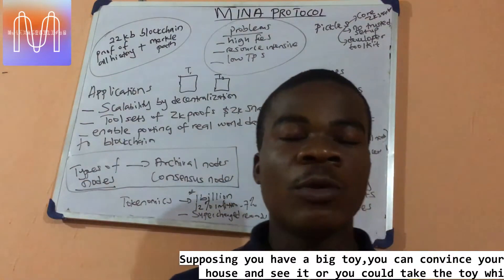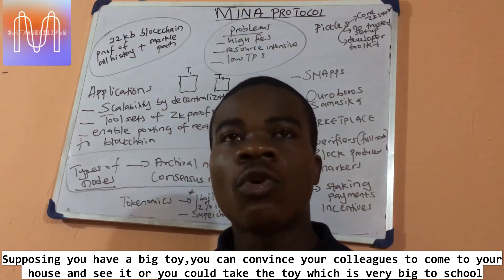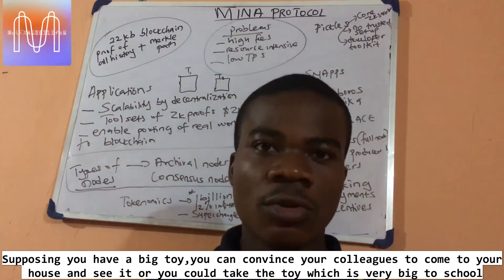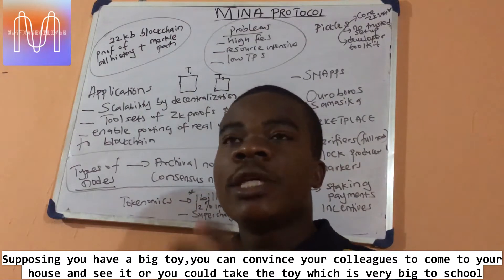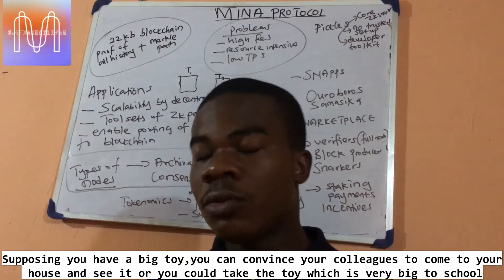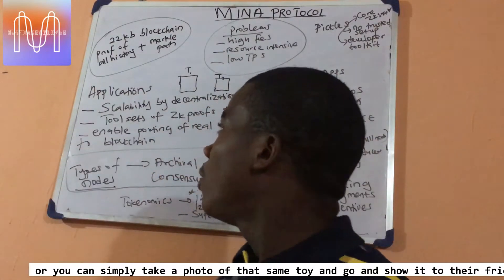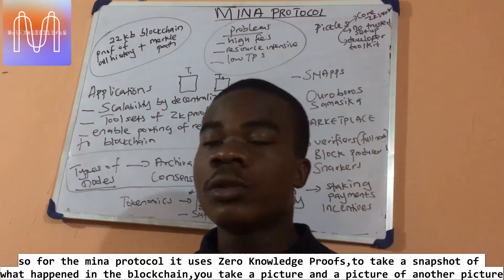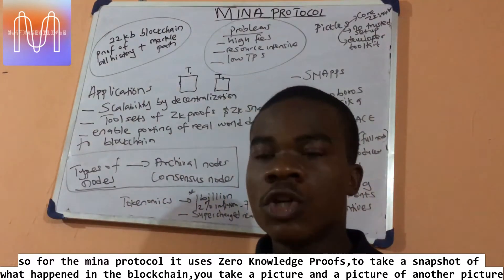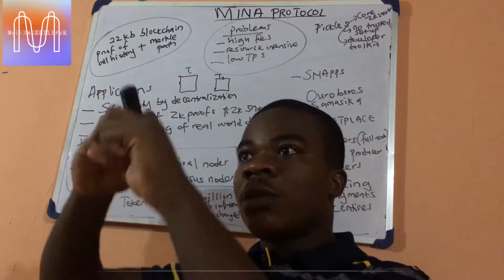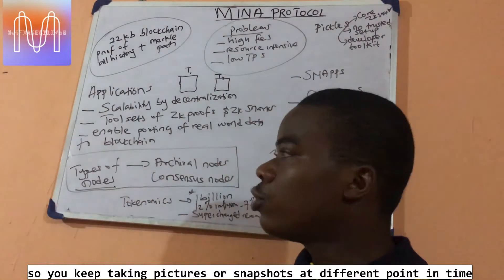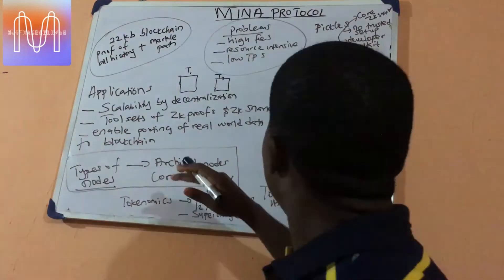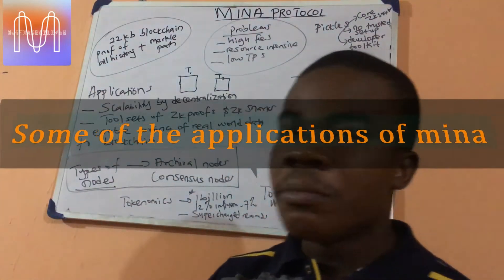A good example to explain this: suppose you have a very big toy. You can either convince your colleagues to come and see the toy, or you can take the toy somewhere — which may not be possible because it's very big — or you can simply take a photo of that toy and show your friends. For the Mina Protocol, it uses zero-knowledge proofs to take a snapshot of whatever happens on the blockchain. You take a picture, then take another picture of that picture, and keep taking pictures.